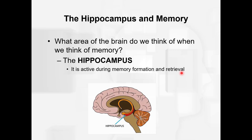We've talked about in previous videos about three different types of long-term memory. So are those all formed in the same way? Is the hippocampus needed to form procedural, semantic, and episodic memories? That's what the assignment you're going to submit is going to be — imagine if your hippocampus was removed, would those memories be intact?